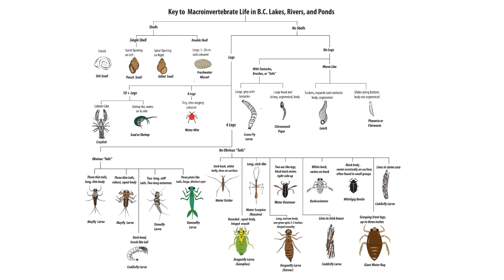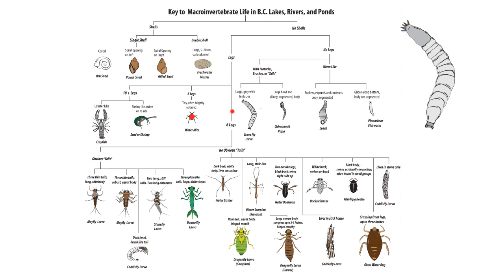Here's a more complex dichotomous key designed to identify macroinvertebrates that live in British Columbia's lakes, rivers, and ponds. We're going to use it to identify two invertebrates. Starting with the first one, we ask: does this animal have a shell or no shell? It clearly does not have a shell, which takes us down the no-shell pathway. Next, we ask about legs — it does not have any legs. Then we ask: is this animal worm-like, or does it have tentacles, brushes, or tails? Looking at its head, we can see structures we would call tentacles. That takes us to the identification: large and gray with tentacles — a crane fly larvae.